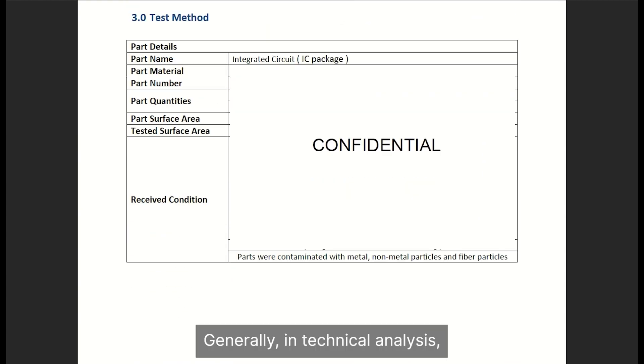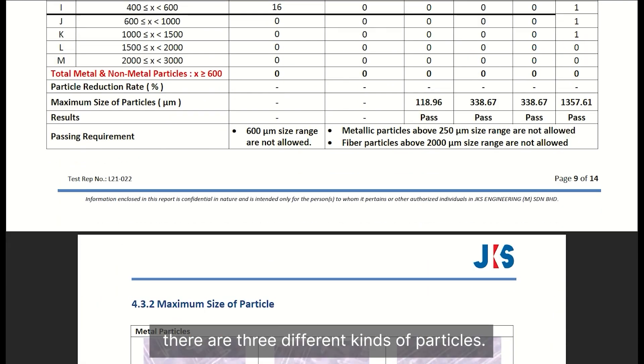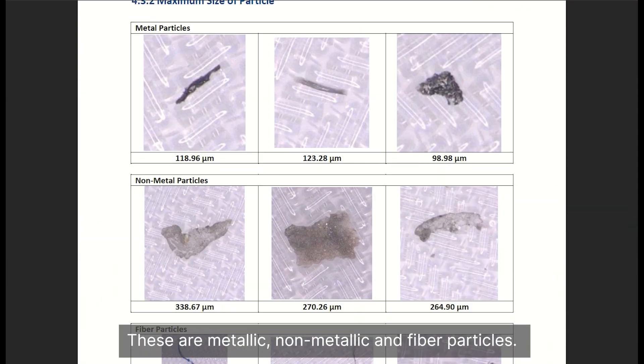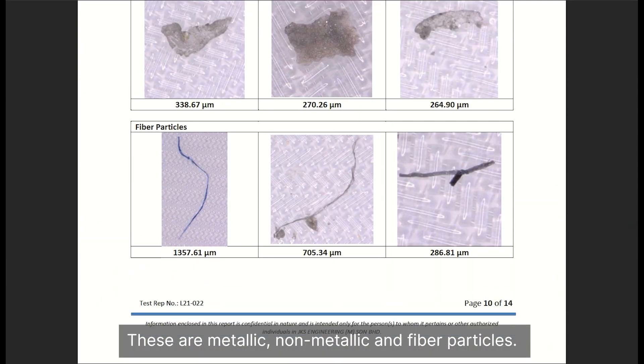Generally in technical cleanliness analysis, there are three different kinds of particles. These are metallic, non-metallic, and fibre particles.